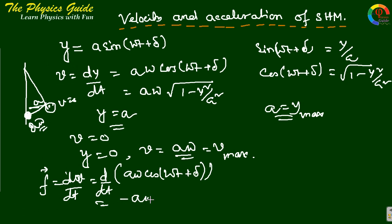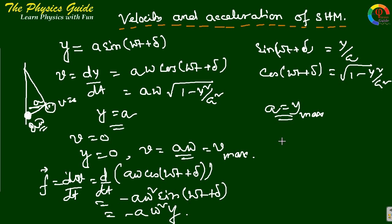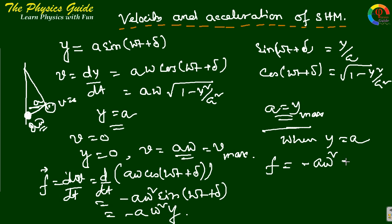The acceleration equals dv/dt = d/dt of aω·cos(ωt + δ), which gives −aω²·sin(ωt + δ) = −aω²·y. When y = a, the acceleration gives −aω², which is the maximum acceleration. When y = 0, the acceleration is also zero, which is the minimum.